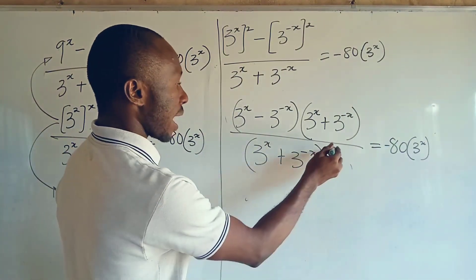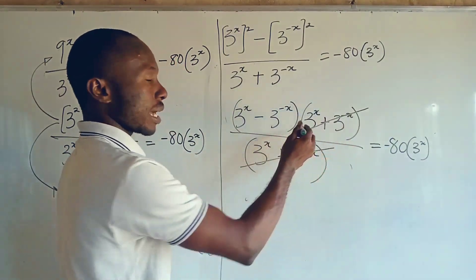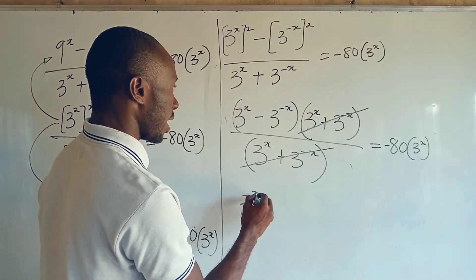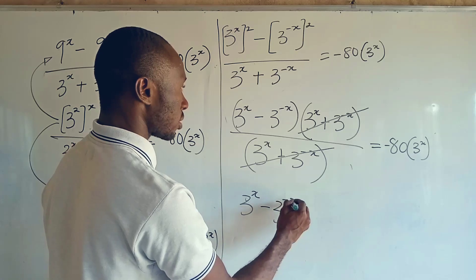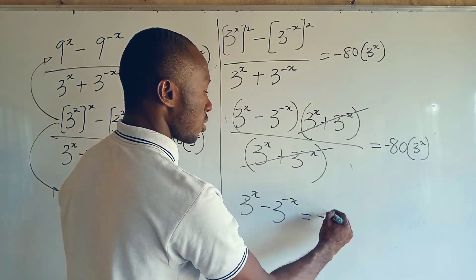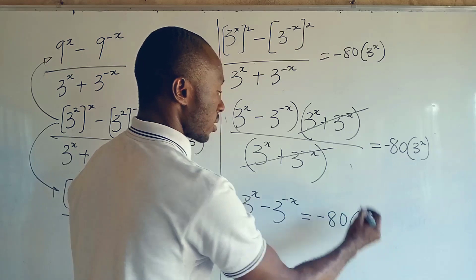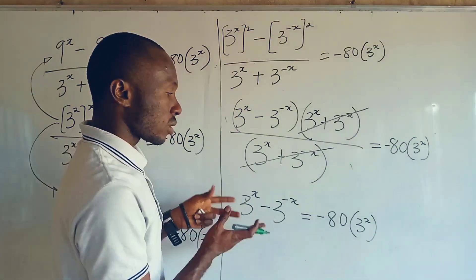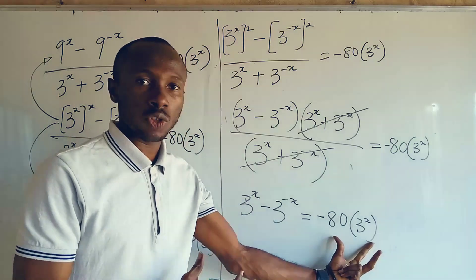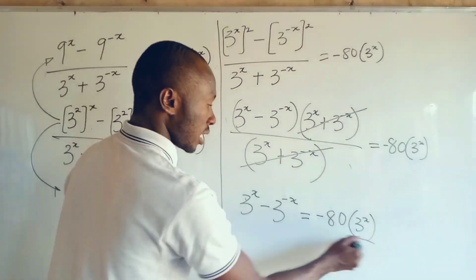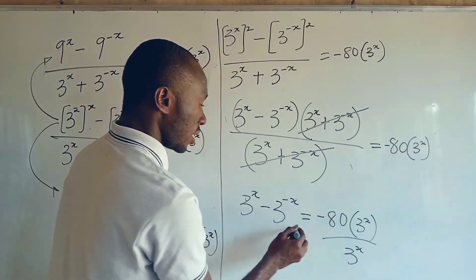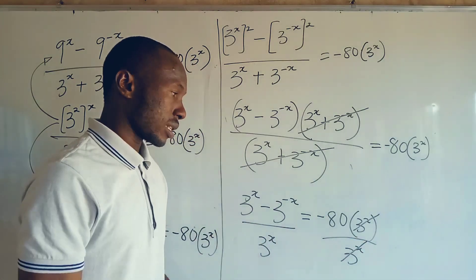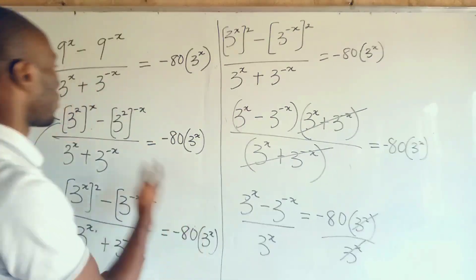You can see that the 3 to the power of x plus 3 to the power of minus x cancels out, so we have 3 to the power of x minus 3 to the power of minus x, equal to minus 80 times 3 to the power of x. The next thing I want to do is divide both sides by 3 to the power of x — dividing here and dividing there — so this guy will cancel out.